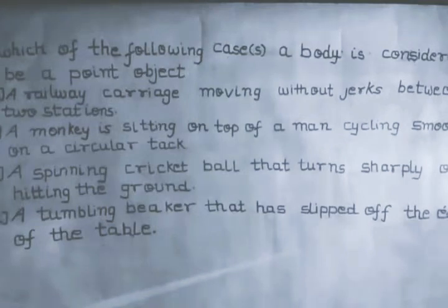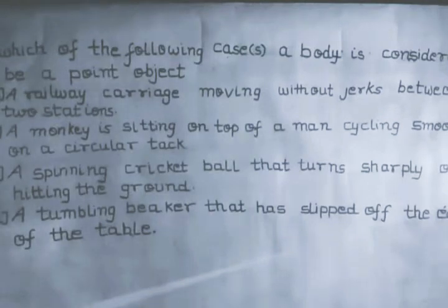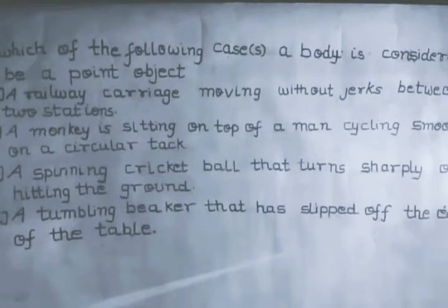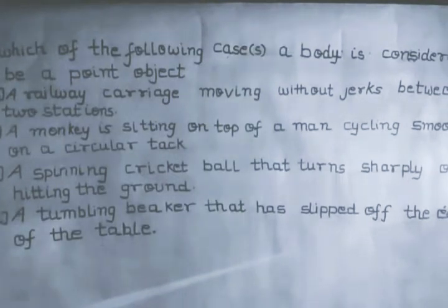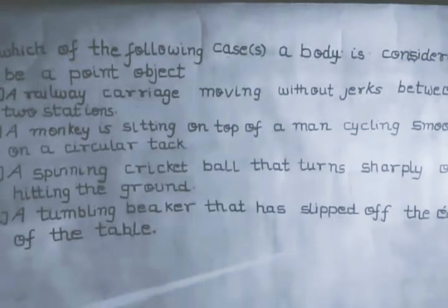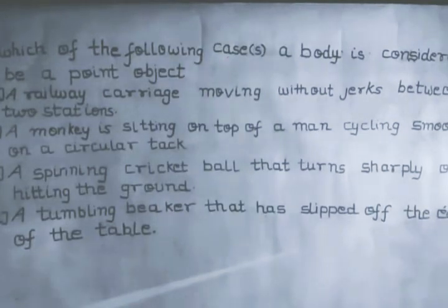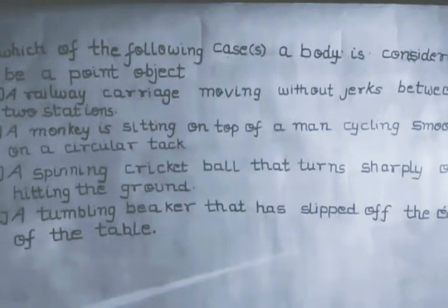What should we include in the definition of a point object? What is a point? Point means zero dimension. Zero dimension means it has neither length nor breadth. A body can move along a path and it can have some other dimensional motion also.